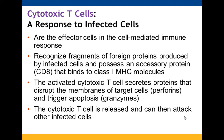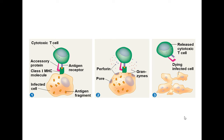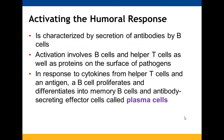Cytotoxic T-cells are the effector form of the cell-mediated response. They recognize antigen fragments on infected cells presented via MHC class 1 molecules, with accessory protein CD8. When activated, they produce perforins that break down target cell membranes and granzymes that induce apoptosis. Once a cell is destroyed, the cytotoxic T-cell can be released to attack other infected cells.